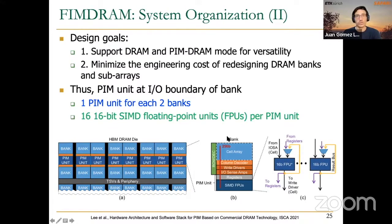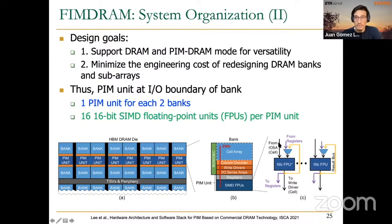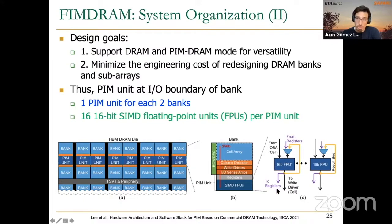In this SIMD unit connected to the bank, there are registers for storing intermediate results. Each SIMD lane has lines coming directly from the input-output sense amplifiers — data coming directly from the DRAM cells. A multiplexer decides whether the second operand comes from registers or from the result bus. The output of each lane can go either to a register or to the write driver back to the memory array.